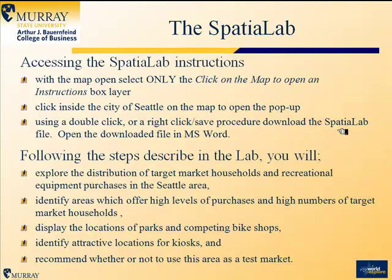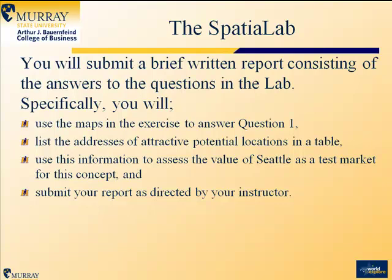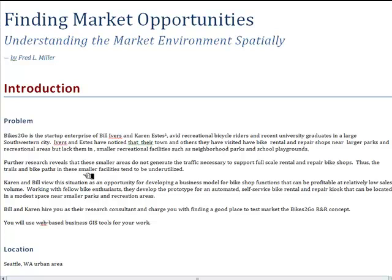Once you have the spatial lab up, it will walk you through the following steps. You will explore the distribution of target market households and recreational equipment purchases in the Seattle area. You will identify areas which offer high levels of purchases and high numbers of target market households — these will be the focus of your marketing strategy. You will compare the locations of parks and competing bike shops to those highly attractive targeted areas, identify attractive locations for the kiosks, and recommend whether or not to use the Seattle area as a test market.